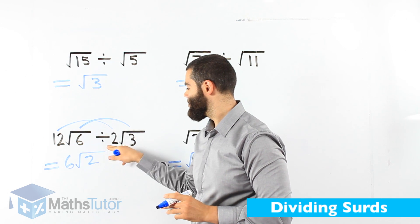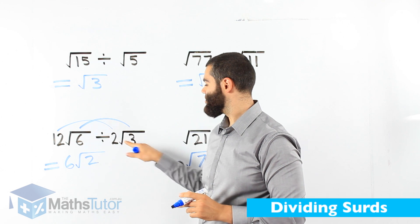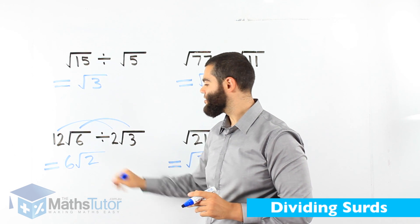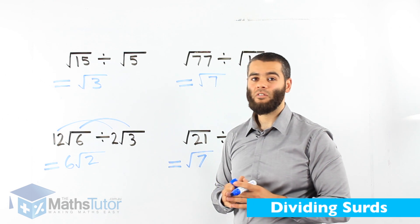Whole numbers: 12 divided by 2 is 6. And root 6 divided by root 3, 6 divided by 3 is 2. Our answer is 6 root 2.